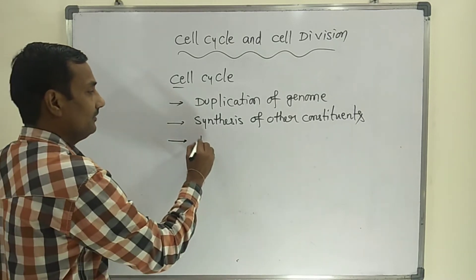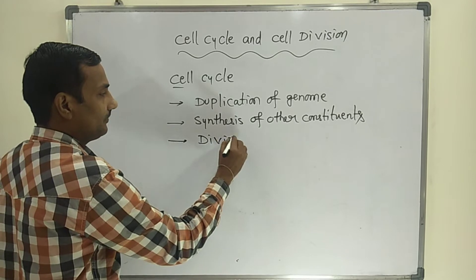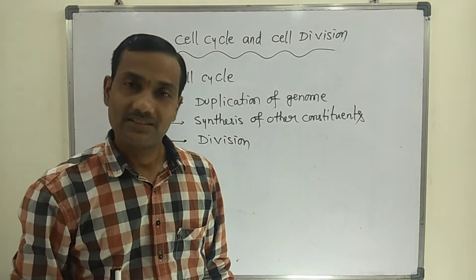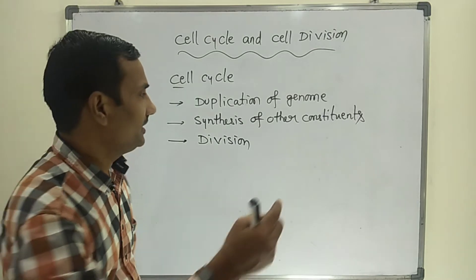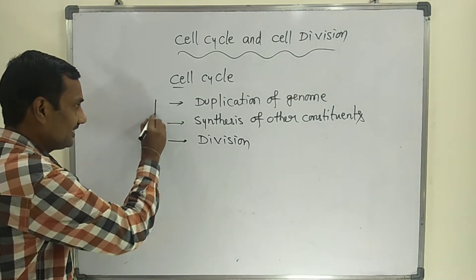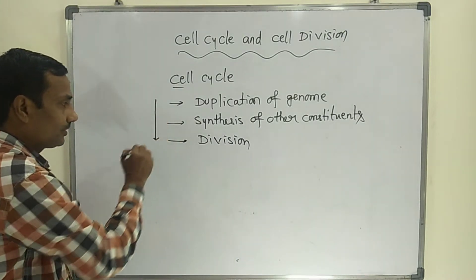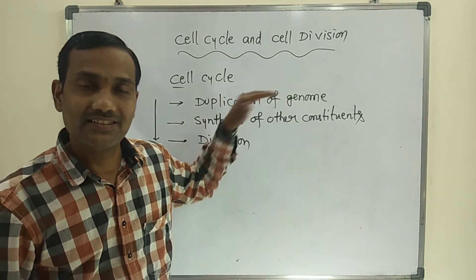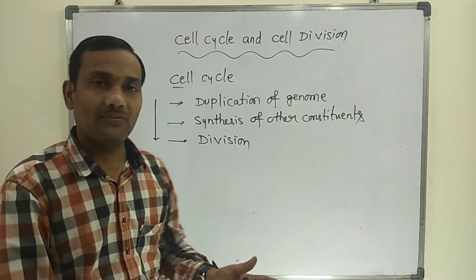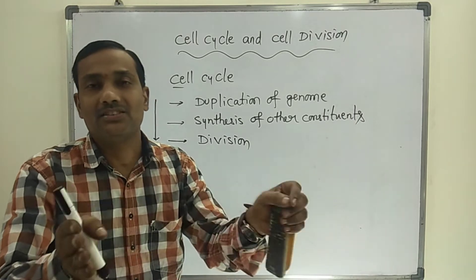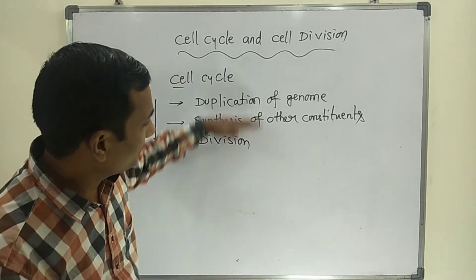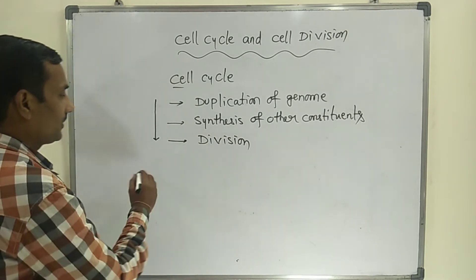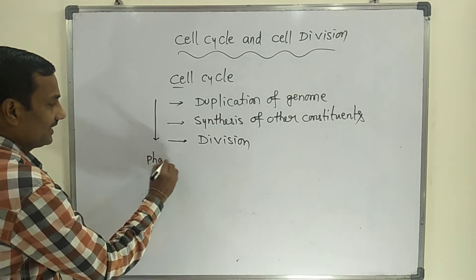Next is division of the cell. That is the final major event that occurs during the cell cycle. All these cyclic events together are called the cell cycle.